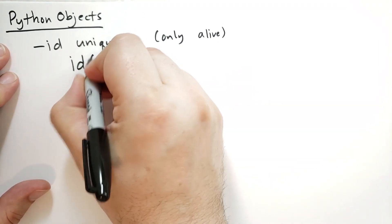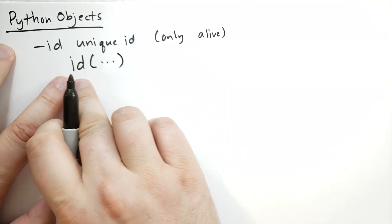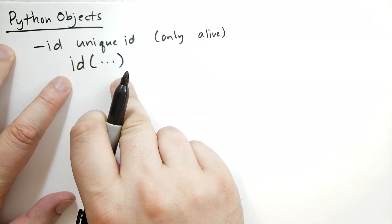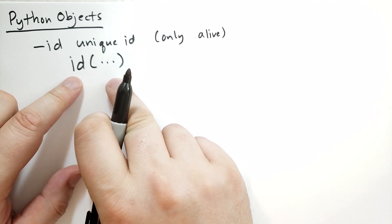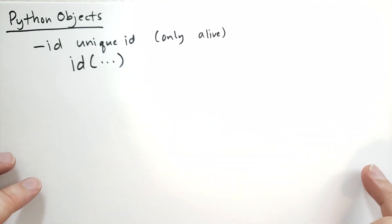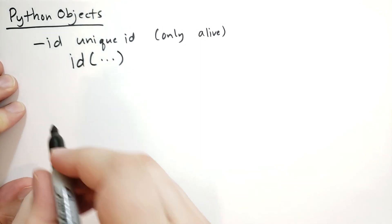And you could obtain the ID of an object by calling the ID function on that object. It'll tell you what that object's ID number is. Given an object's ID number you can't really do much with it. It's just useful for identifying objects and keeping them separate from one another.